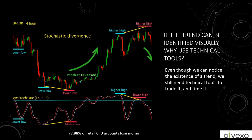We also have indicators you might want to add on, such as stochastics or MACD — these are momentum indicators. We also have other indicators that are like speedometers, telling you how fast the market is moving. So even though we can notice a trend visually, we still need technical tools to trade it and time it.